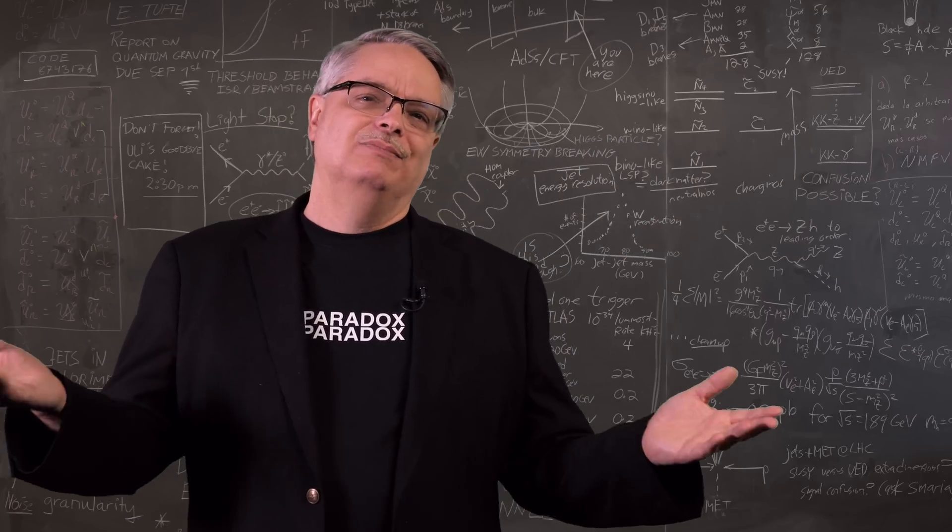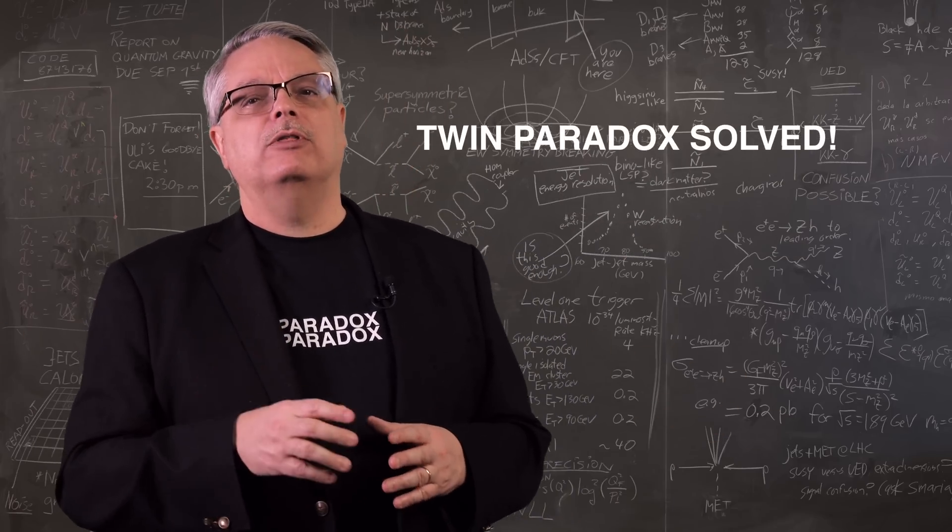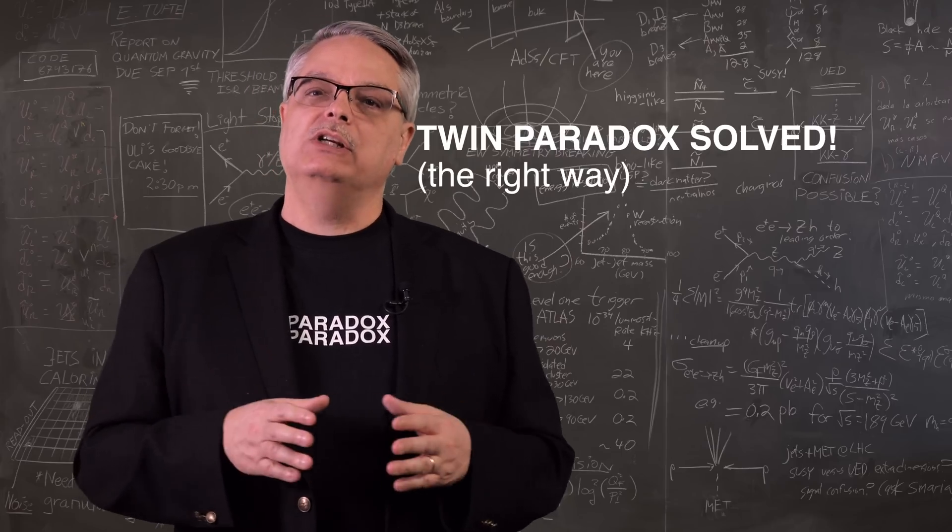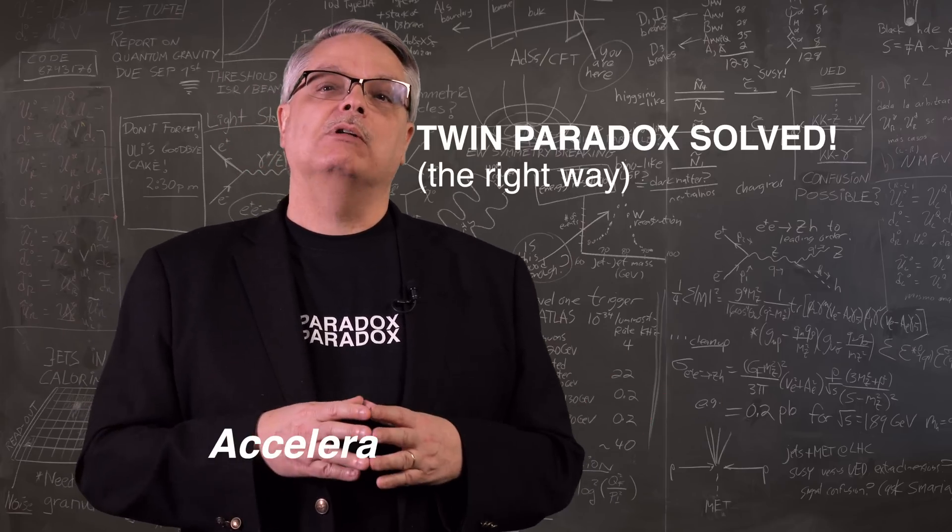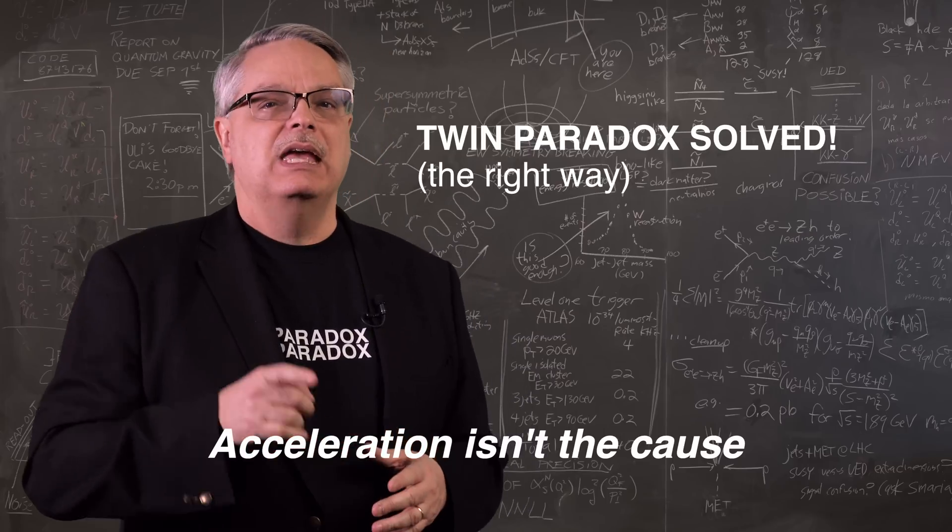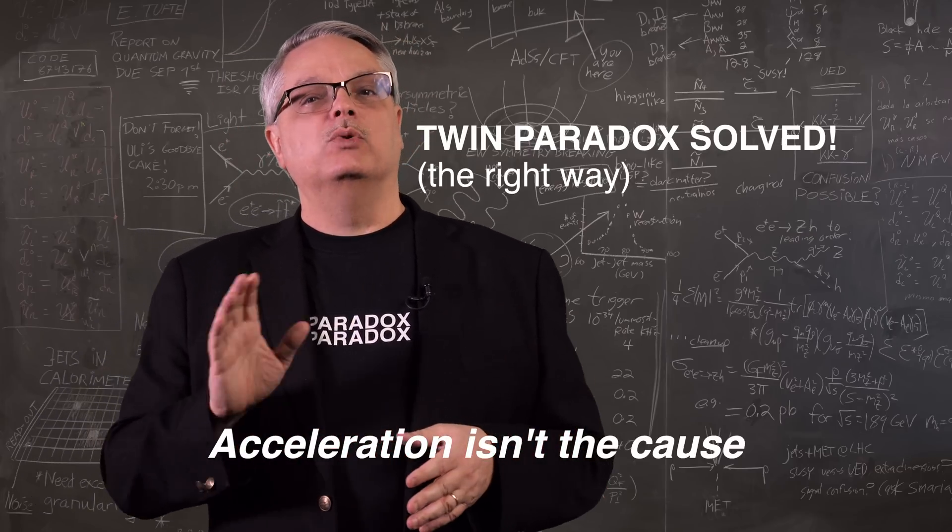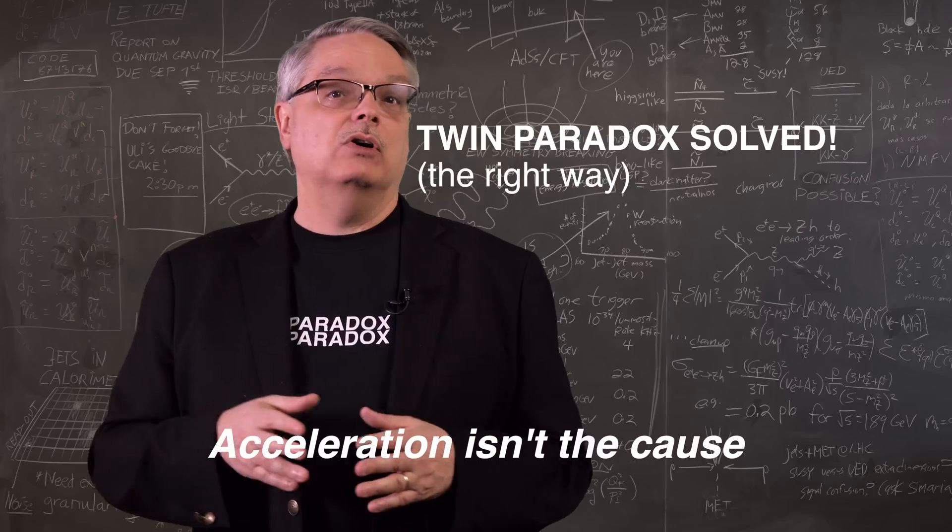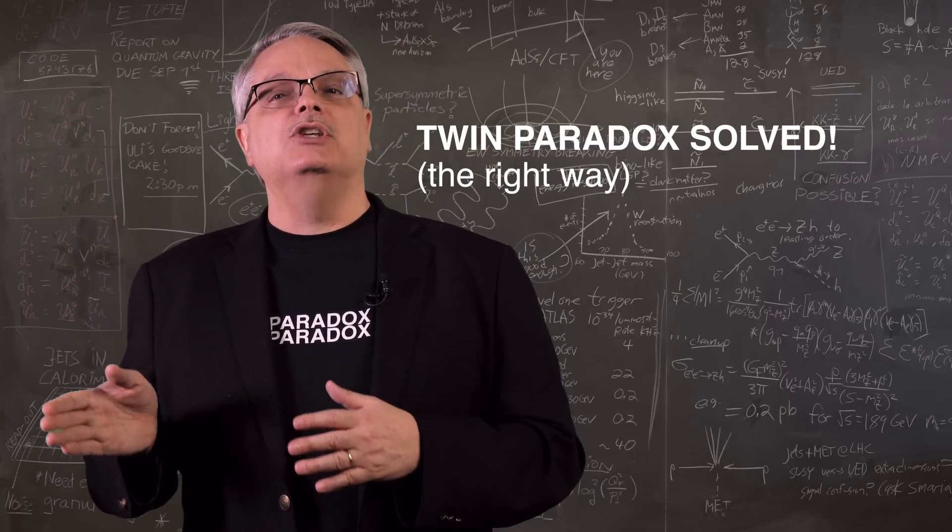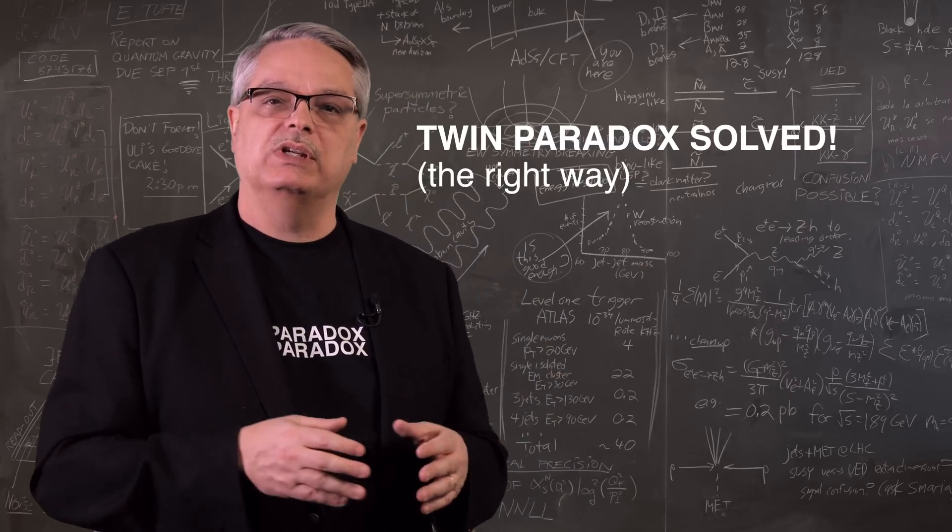So that's the answer. The twin paradox isn't a paradox. Further, the solution doesn't depend on the accelerations. After all, no accelerations occurred in the example. And the bottom line is that if a person leaves the Earth and flies to another star at high velocity and returns, that the traveler will age much slower than a person who stays on Earth.